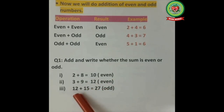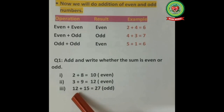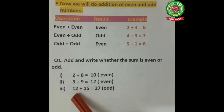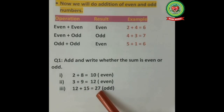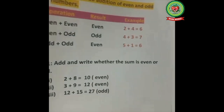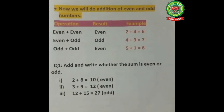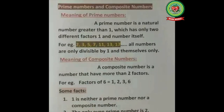Third, 12 plus 15 equals 27. Here, 12 is even and 15 is odd — even plus odd gives an odd answer, which is 27. I think students, all of you are now able to differentiate between even and odd numbers.